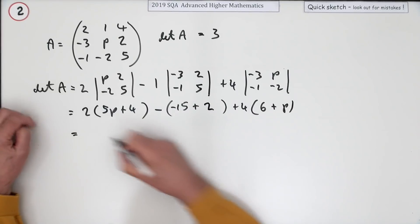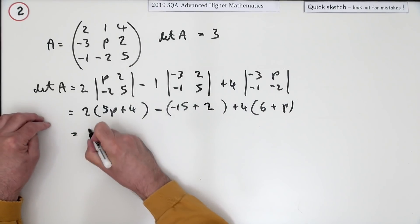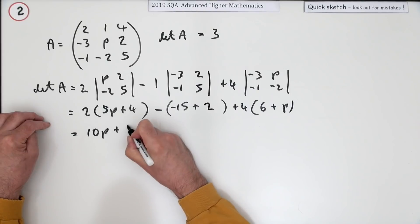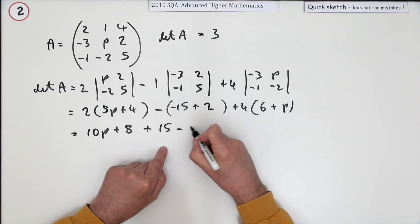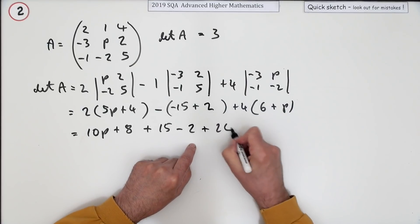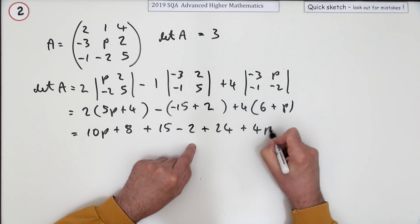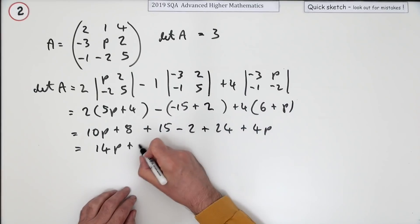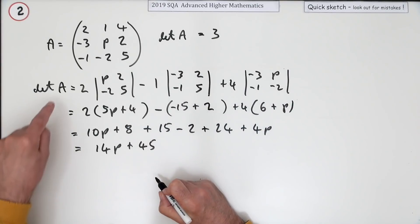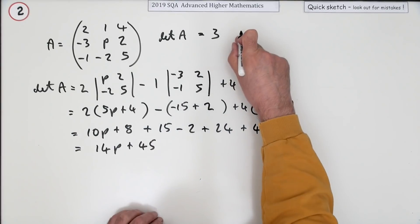Getting there now. Add it up so there's 10P plus eight, plus plus 15 minus a 2, plus 24 plus 4P, which altogether comes to just 14P and a bunch of numbers which will be 6, 30, 45, and it says that determinant should equal 3.